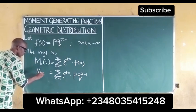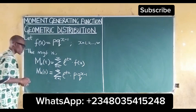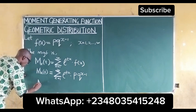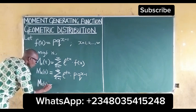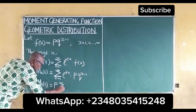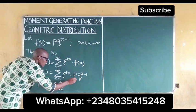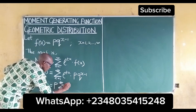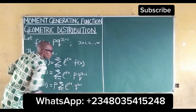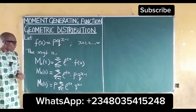The next thing to do is to rearrange the moment generating function. Rearranging, we can write the moment generating function as p times the summation, with x ranging from 1 to infinity, of e^(tx) multiplied by q^(x−1).